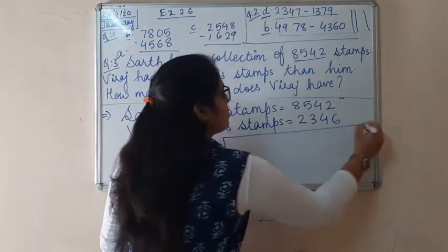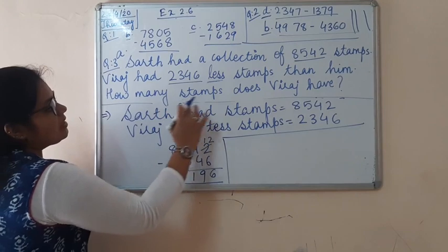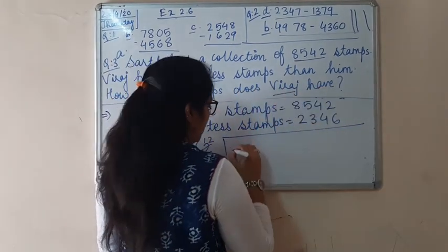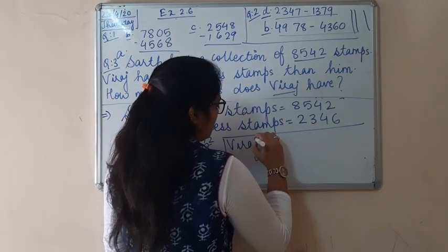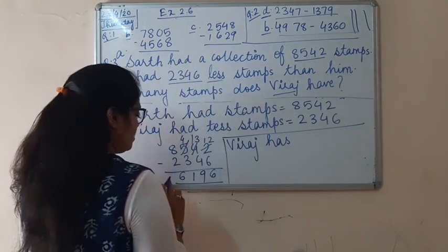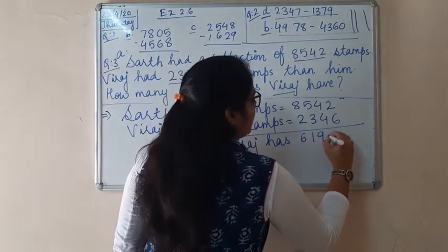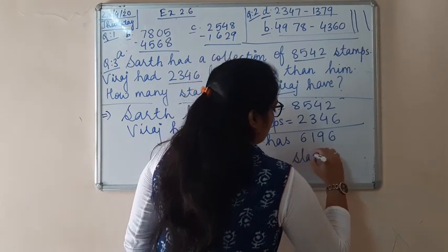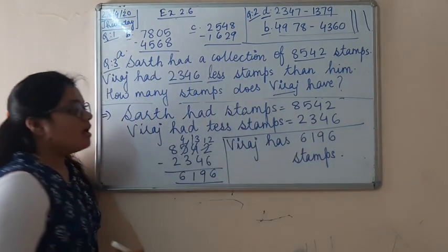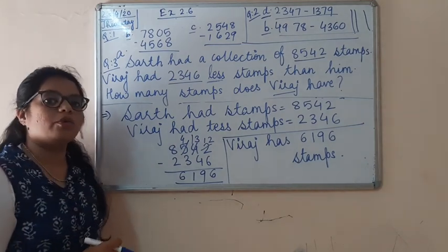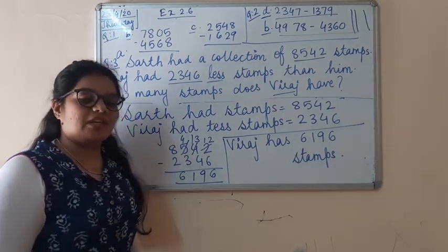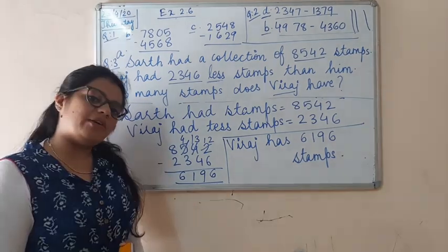So what will be the statement? How many stamps does Viraj have? Viraj has 6,196 stamps. This is how you write it in your notebook. In the next video, we will see the subtraction of larger numbers. Till then, thank you everyone.